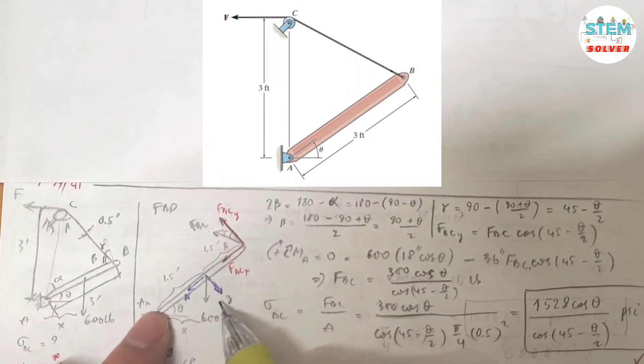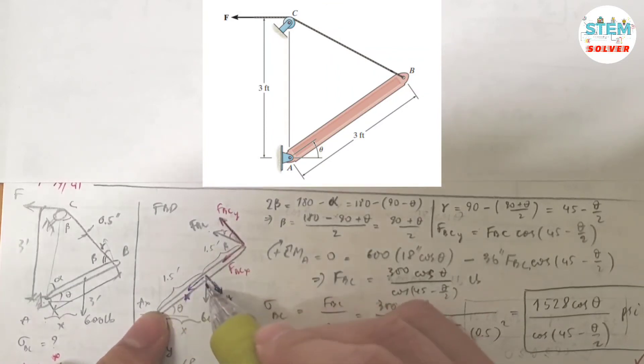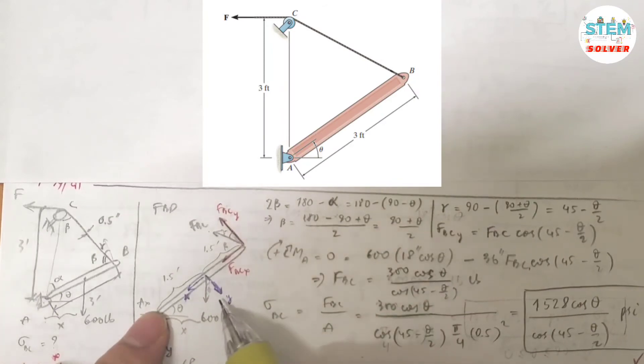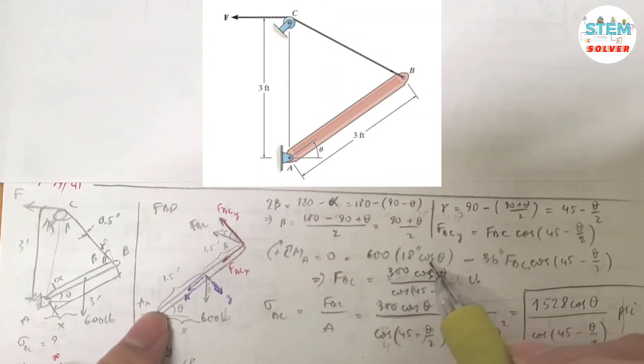So the moment about A is equal to 600 pounds times cosine of theta.